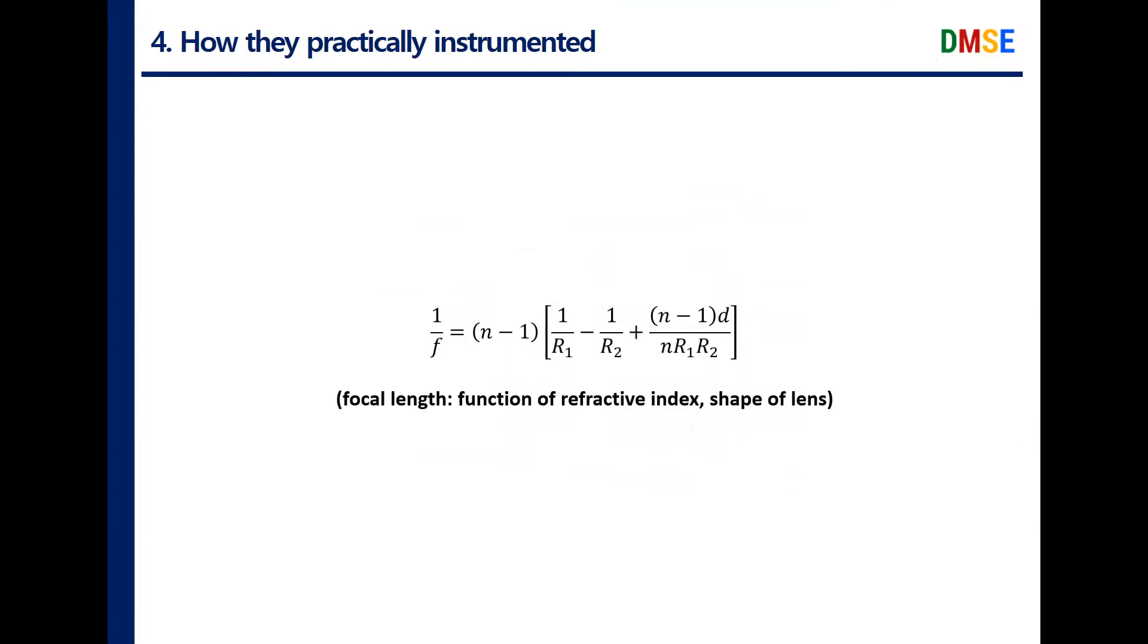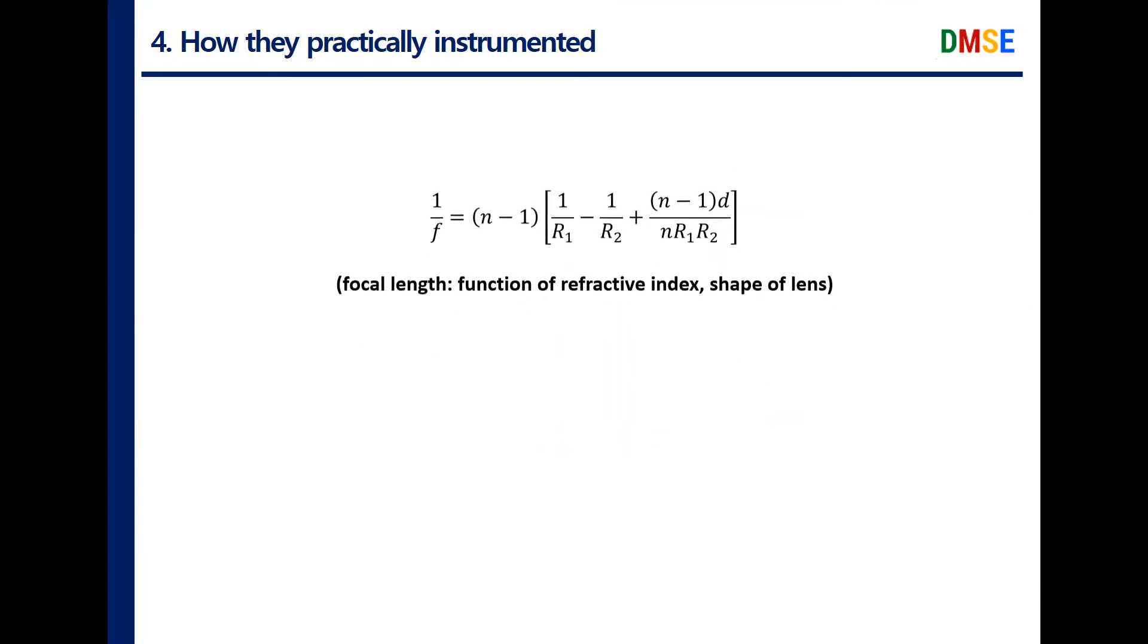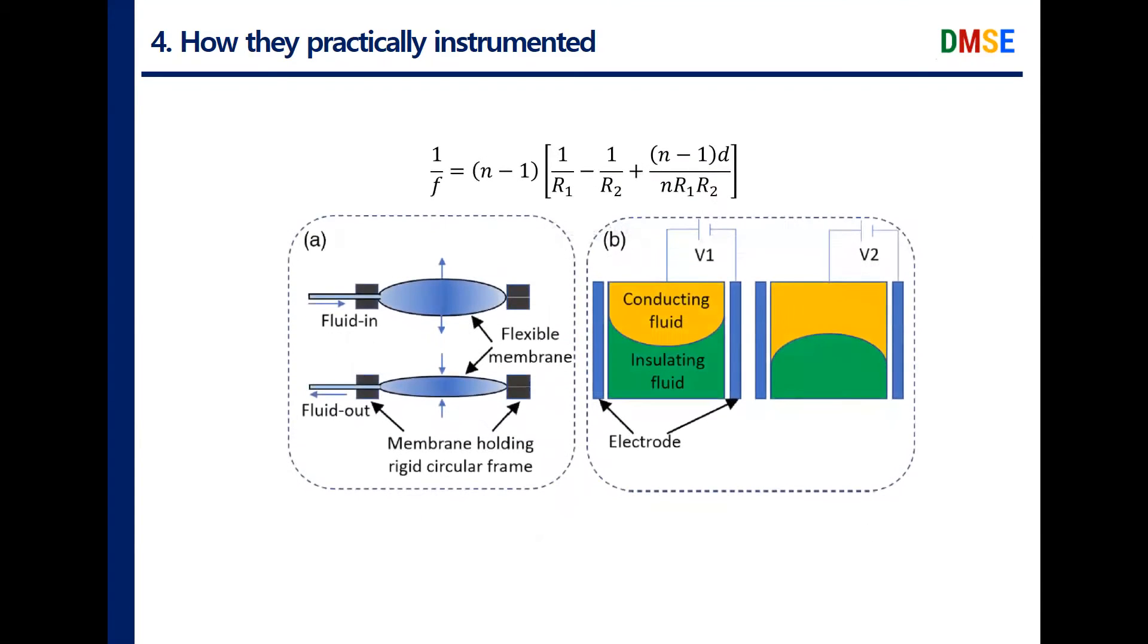Second, we can scale focal length by changing the shape of lenses. There are two ways to change the shape of a lens. Firstly, by injecting or extracting the fluid inside of flexible membranes, we can control thickness and curvature of lenses. Another method is using the interface between two liquids with different polarity. In this case, biasing different voltages causes bending of the interface, which is the same as changing the lens shape.